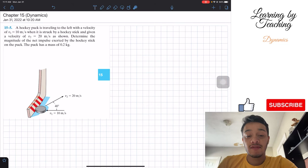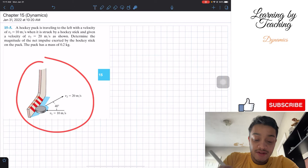A hockey puck is traveling to the left with a velocity of v1 equals 10 meters per second when it is struck by a hockey stick and given a velocity of v2 equal to 20 meters per second as shown. Determine the magnitude of the net impulse exerted by the hockey stick on the puck. The puck has a mass of 0.2 kg.